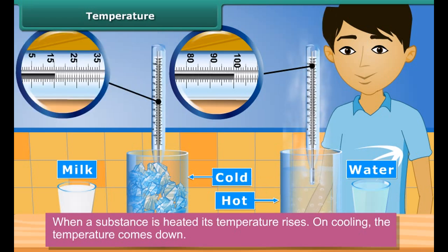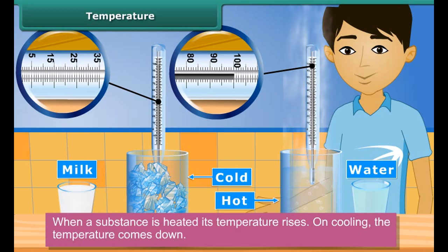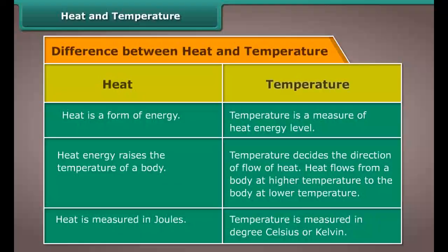A hot body is at a higher temperature than a cool body. When a substance is heated, its temperature rises. On cooling, the temperature comes down. The degree of hotness or coldness in a body is described as its temperature.